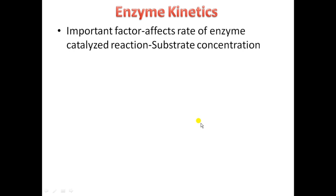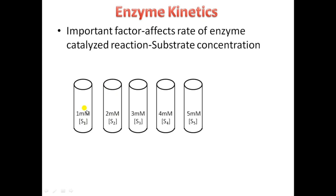An important factor that affects the rate of an enzyme-catalyzed reaction is substrate concentration. To find out how changes in substrate concentration affect the rate of reaction, you set up an experiment taking different concentrations of substrate — for example, 1 millimolar, 2, 3, 4, 5, and so on. All other parameters must be kept constant: the concentration of the enzyme, the reaction time, pH, temperature, and everything else, so that any change in rate reflects purely the effect of the different substrate concentration.